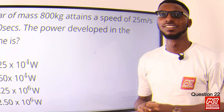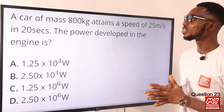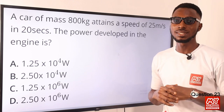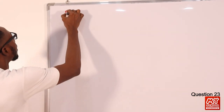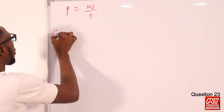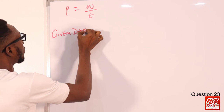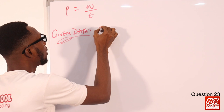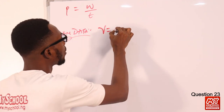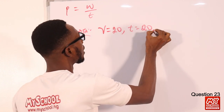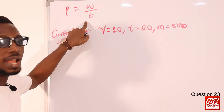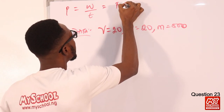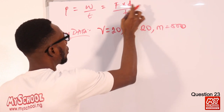Question 23: a car of mass 800 kg attains a speed of 25 m/s in 20 seconds. The power developed in the engine is what? We know power P = work done over time = W/t. Given: v = 25 m/s, t = 20 s, mass = 800 kg.